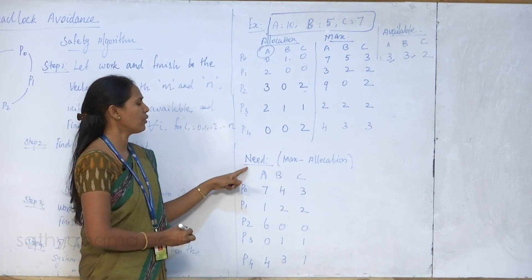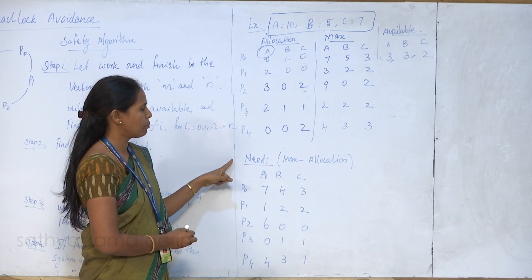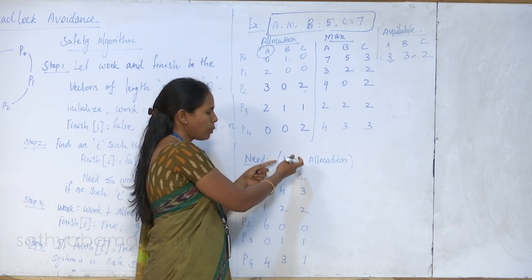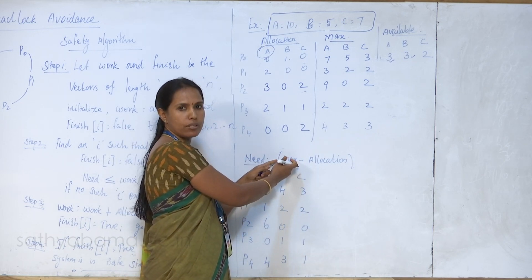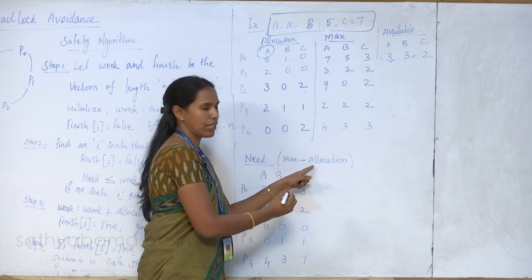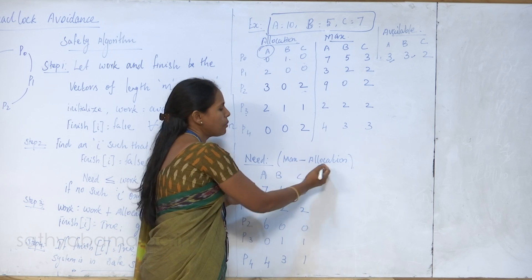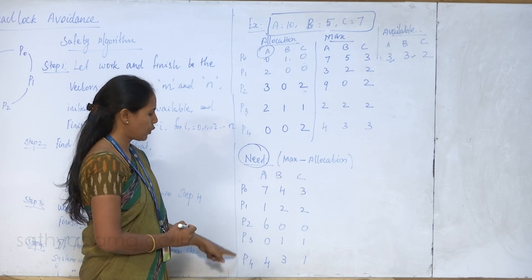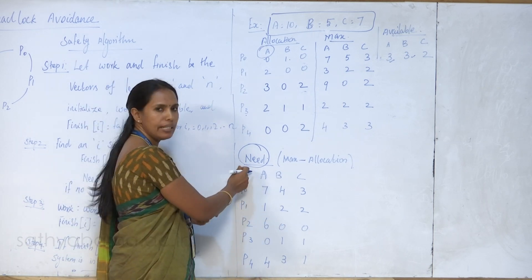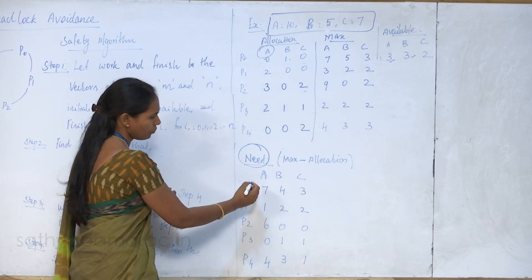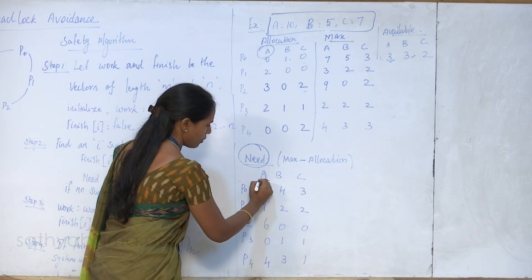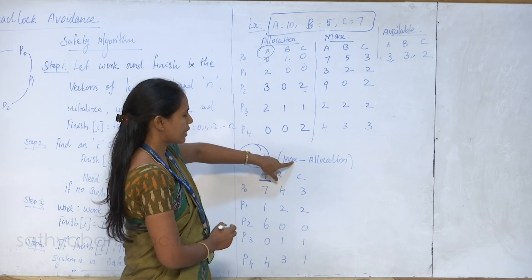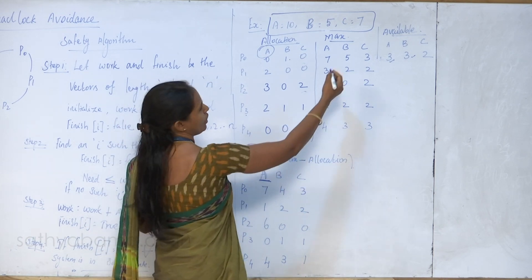We also need to calculate the need matrix. The need is the maximum claim of resources required by every process minus the allocation already given. Need equals Maximum minus Allocation gives the present need of every process from P0 to P4. For resource type A, process P0: maximum is 7, allocation is 0, so 7 minus 0 equals 7 resource instances needed.